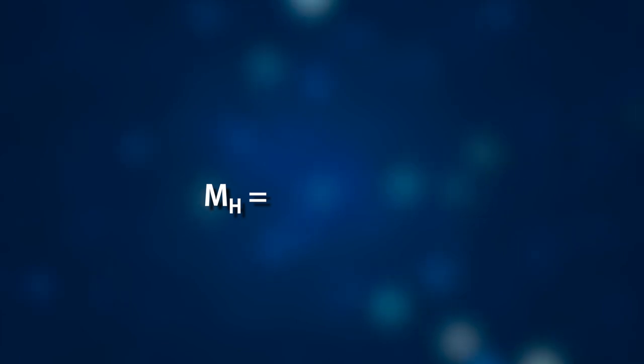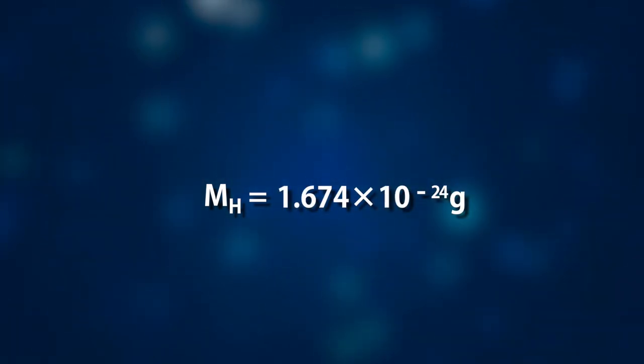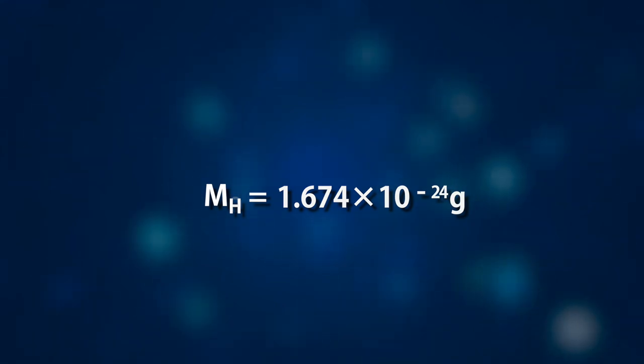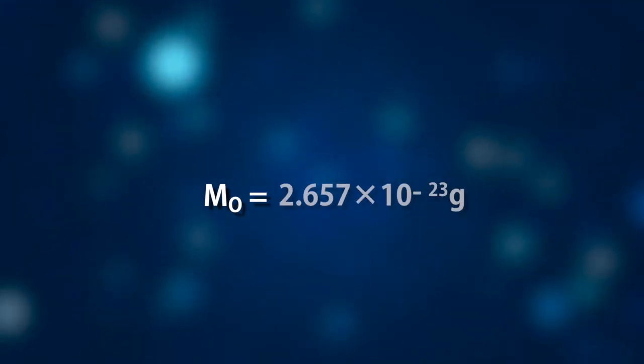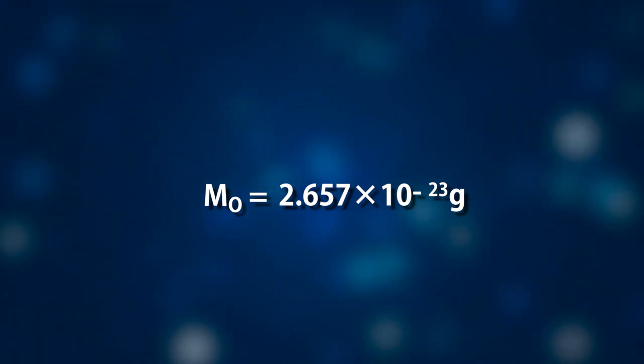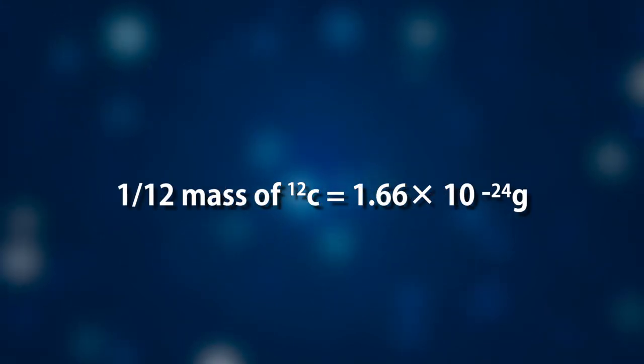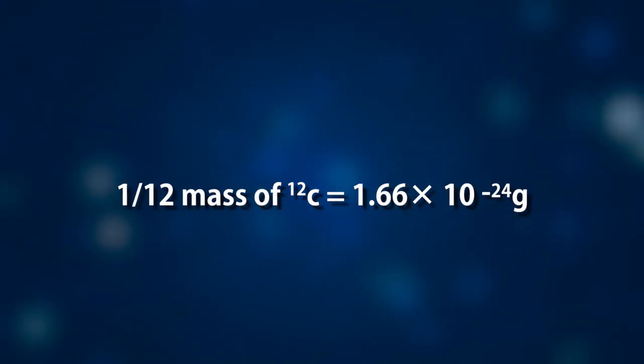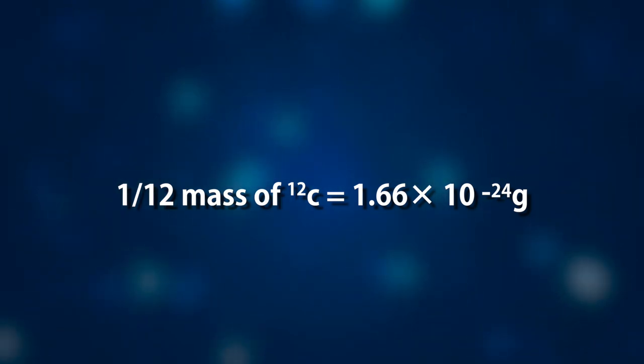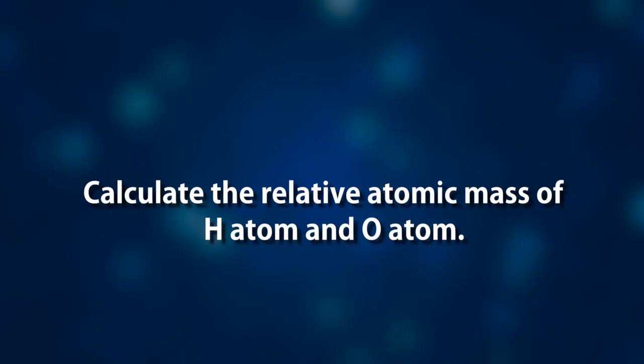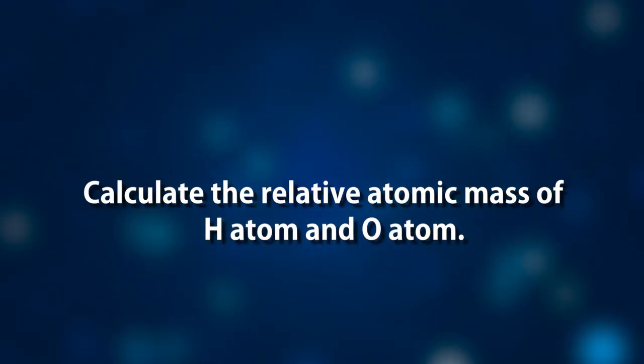Let's do some numbers to see if you really understand the concept of relative atomic mass. If we know the actual mass of one hydrogen atom is 1.674 times 10 to the minus 24th grams, the mass of one oxygen atom is 2.657 times 10 to the minus 23rd grams, and one-twelfth of the mass of a carbon-12 atom is 1.66 times 10 to the minus 24th grams, please calculate the relative atomic mass of hydrogen and oxygen. Work on this during the break and I will see you in a few minutes.